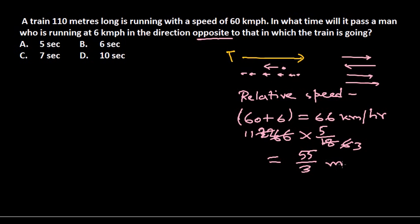Okay, now what we need to find here? What is the total distance covered? Total distance covered here is equal to 110 meters, because the distance of the train itself, right? So what is the time taken by this train to cross this person, or for this person to cross the train?